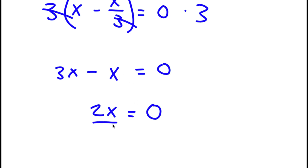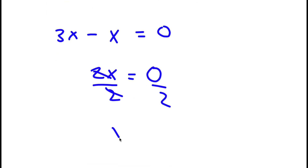To solve this, I'm going to divide both sides by 2. These two cancel out, and I'll be left with x is equal to 0 divided by 2, which is 0.